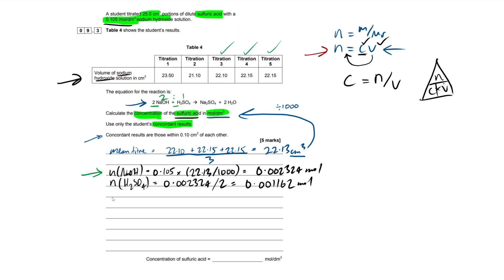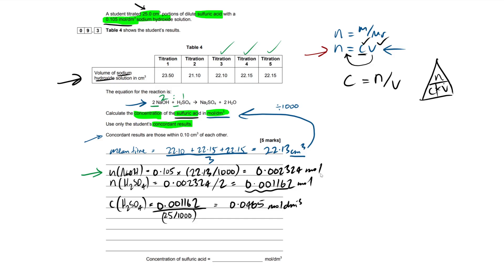So concentration of sulfuric acid = 0.001162 ÷ (25 ÷ 1000). We divide 25 cm³ by 1,000 to convert to dm³. Putting that into the calculator gives 0.0465 mol/dm³. That is our final answer.